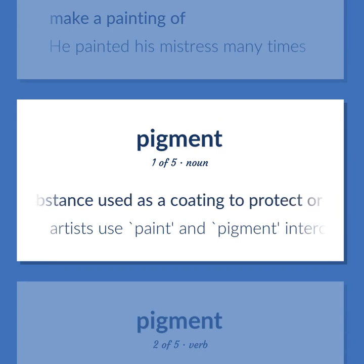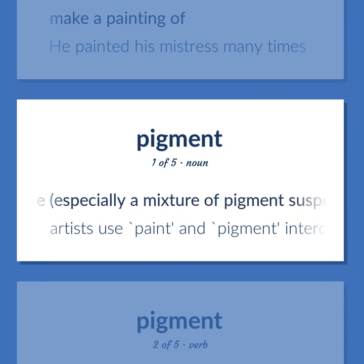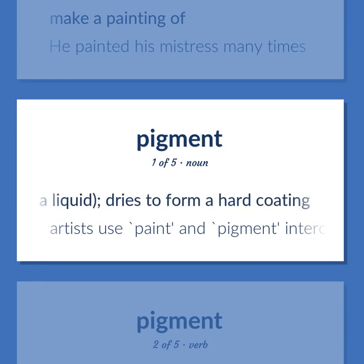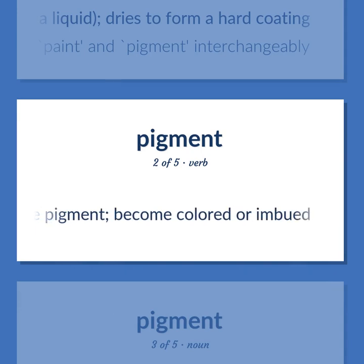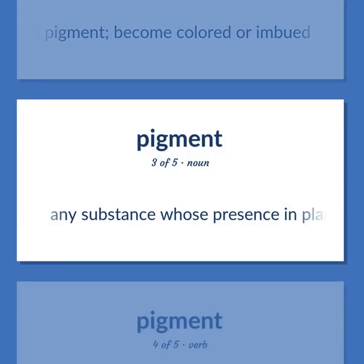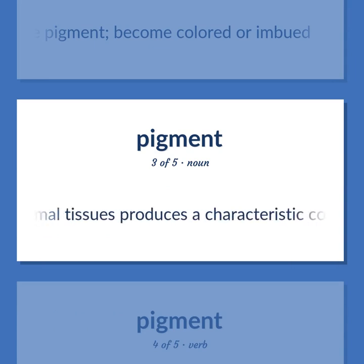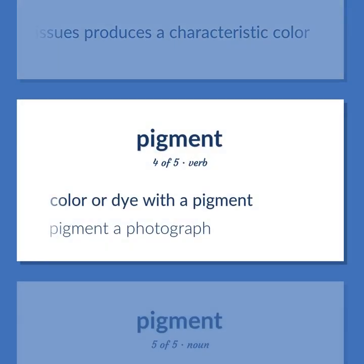A substance used as a coating to protect or decorate a surface, especially a mixture of pigment suspended in a liquid, dries to form a hard coating. Artists use paint and pigment interchangeably. Acquire pigment. Become colored or imbued. Any substance whose presence in plant or animal tissues produces a characteristic color.